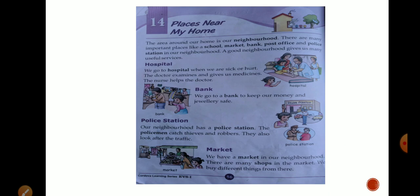In a neighborhood we can get to see a hospital, a police station, a bank, a market, and a post office. These are some things which we can get to see in a neighborhood. A good neighborhood gives us many useful services.